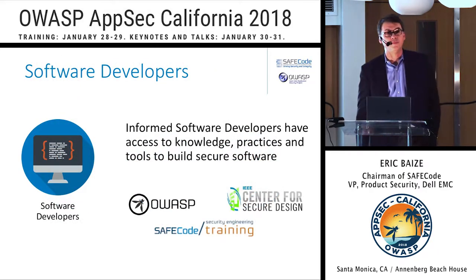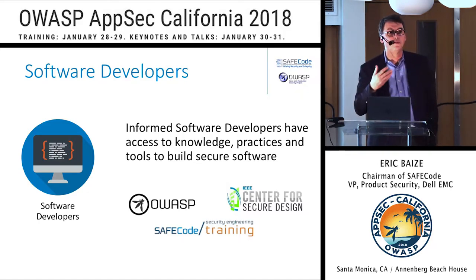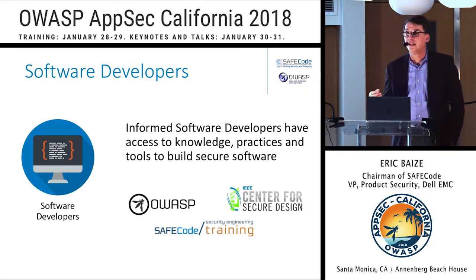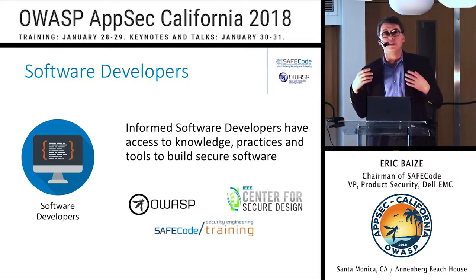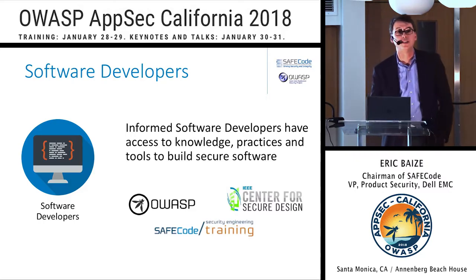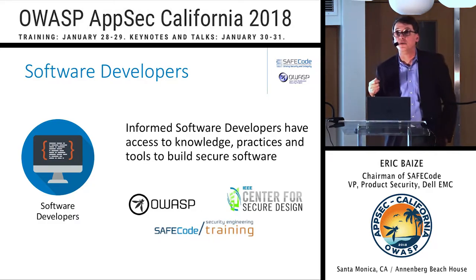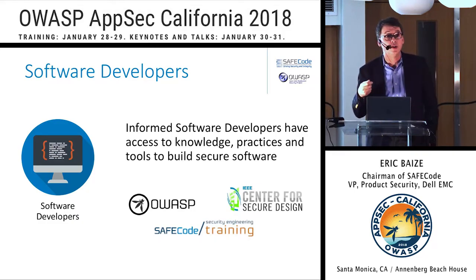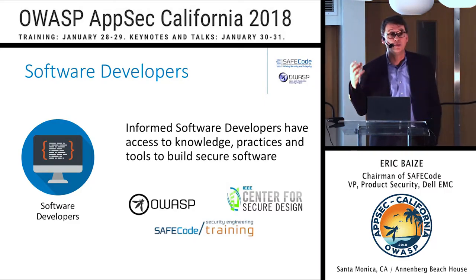So today I thought it would be a perfect time to deliver a state of the union and talk about where we are as an industry in helping these stakeholders deliver better software security. Let's start with the developer. I've been in this field for more than 15 years, and the amount of resources available then versus now is night and day. If you are an informed software developer, you have access to tons of resources — whether it's OWASP guidance, SafeCode training, IEEE secure design documents. What is missing today is how to make these resources used and adopted by more developers at scale.